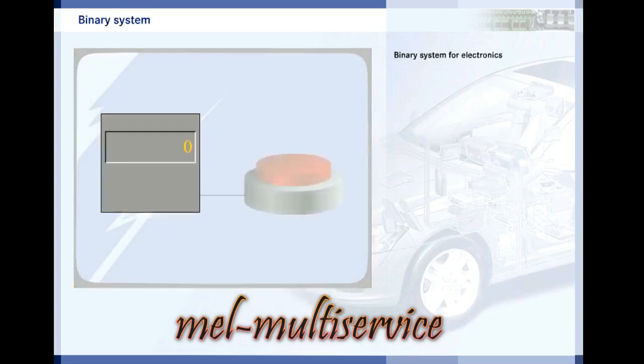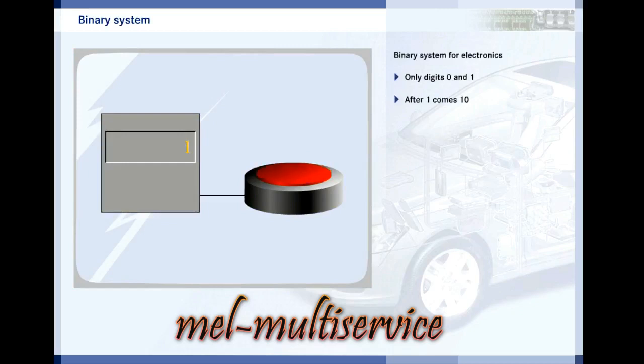The binary system is a number system which can easily be represented using electronic switches. The only numbers it uses are 0 and 1. You can count from 0 to 1, and the next step is a carryover number. This number is pronounced one-zero so that it can't be confused with 10. The next number up is one-one. Go back to the beginning and click the button to carry on counting.